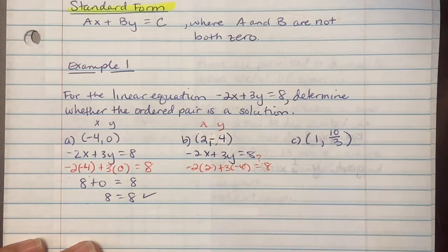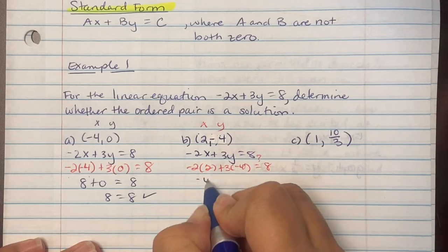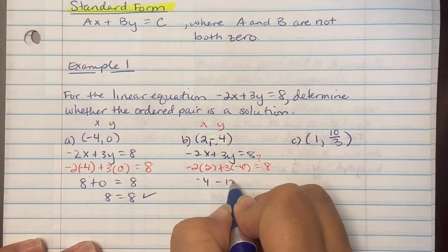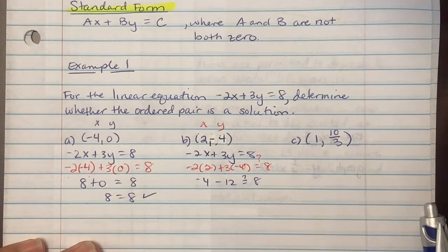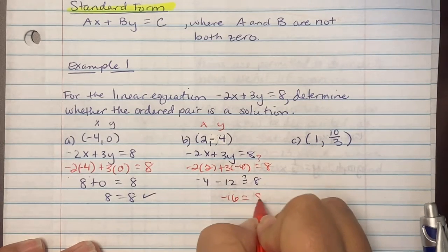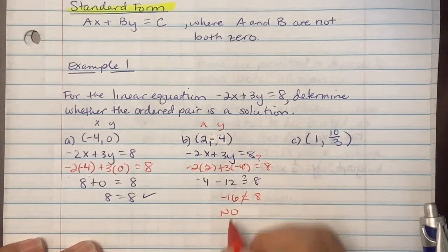So we want to know if the left side and the right side are equivalent. So we get -4, and 3 and -4 is -12. And when you do the math and add them together, we get -16 is equivalent to 8, which is a false statement. So the answer is no, it is not a solution.